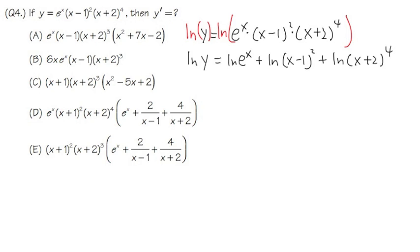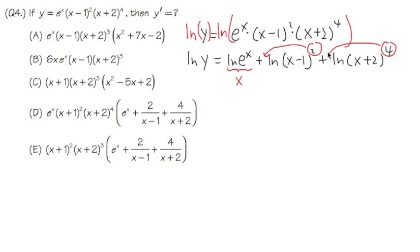Is there any more algebra we can do? Yes. ln of e to the x is just x, because ln and e to the something are inverses of each other. For the second part, when you have ln of something raised to a power, that power can go to the front and become a coefficient. This is not a power rule — we are not taking a derivative yet, so do not subtract 1. This is just a property of ln. Similarly, the 4 in ln of x plus 2 to the fourth power will also go to the front.